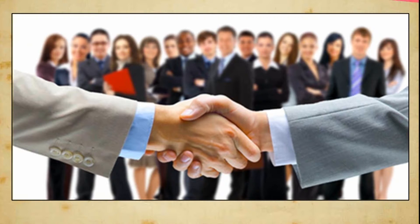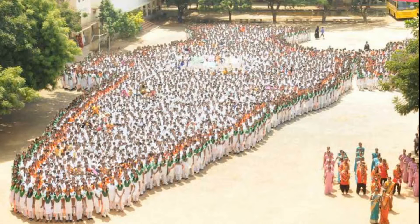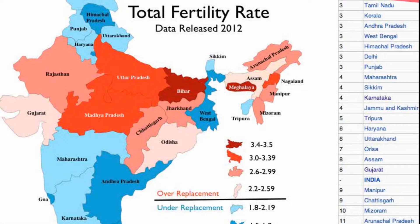Population change: It is an established fact that the population of any area or country is not constant and changes with time. The most important reason is the natural increase or natural decline of population. As conditions became favourable, more children were born, leading to population growth. However, due to diseases and natural calamities, deaths were also high. When the birth rate — births per thousand people — exceeds the death rate — deaths per thousand people — there is an increase in population, called the growth rate.